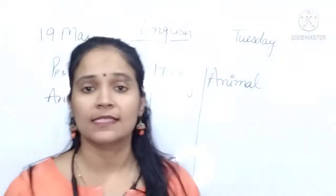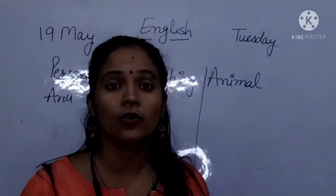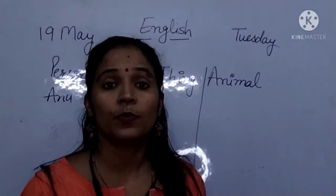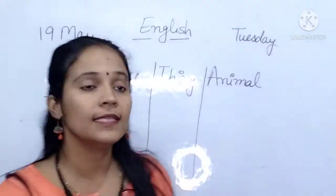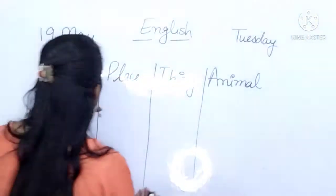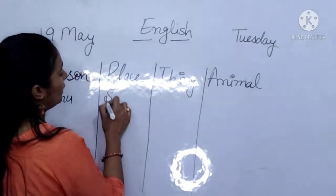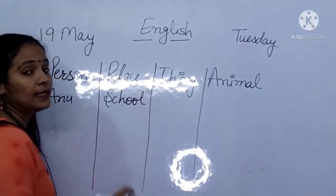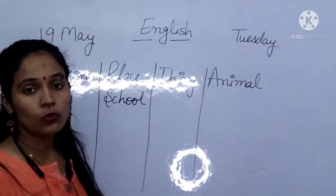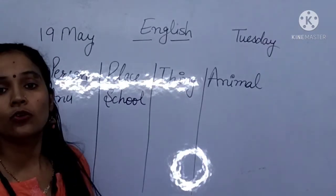Now place. Place is school. Your house, hospital, Delhi, Gurgaon, Kolkata — these are the place names. So we are writing here school — school is a place.